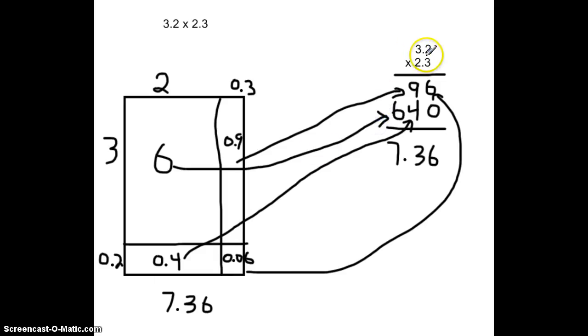So, we can multiply decimals the same way that we multiply with any two-digit number, except we need to take into account the number of decimal places. So, I like to think of it as this is divided by 10, and this is divided by 10. So, when I'm dividing by 10, and I'm dividing by 10, then in the solution, I need to divide by 10 times 10, which is dividing by 100 in my final solution, which means I need to move the decimal point over two places.